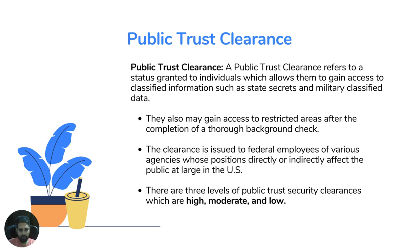Public trust individuals may also gain access to restricted areas after a thorough background check. This clearance is issued to federal employees of various agencies whose positions directly affect the public at large in the United States. There are three levels of public trust: High, Moderate, and Low.